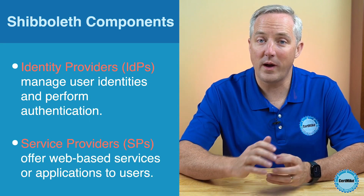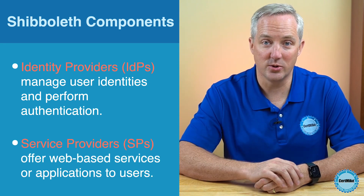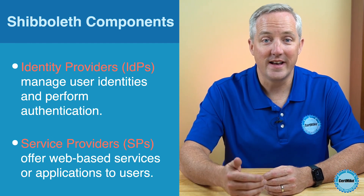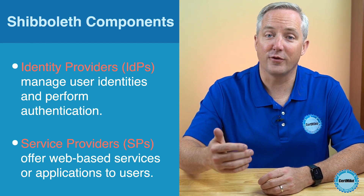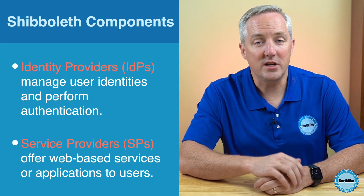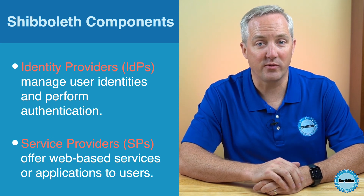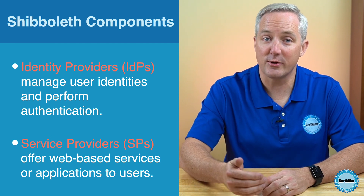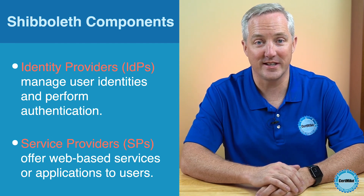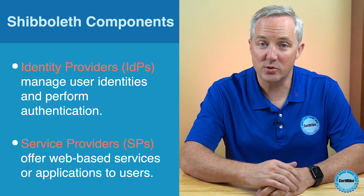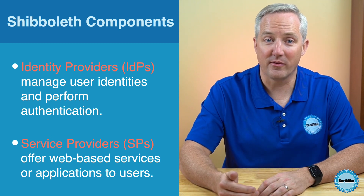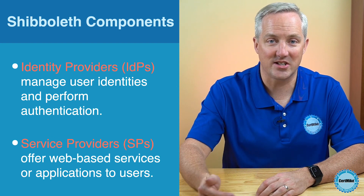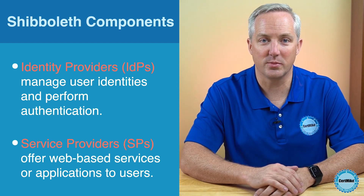Service providers offer web-based services or applications to users. They rely on identity providers to authenticate users and provide user attributes needed for authorization. When a user requests access to a service provider's protected resource, the service provider redirects the user to their home identity provider for authentication. Once the user is authenticated, the identity provider sends a SAML assertion to the service provider, which then grants access to the user based on the received attributes.